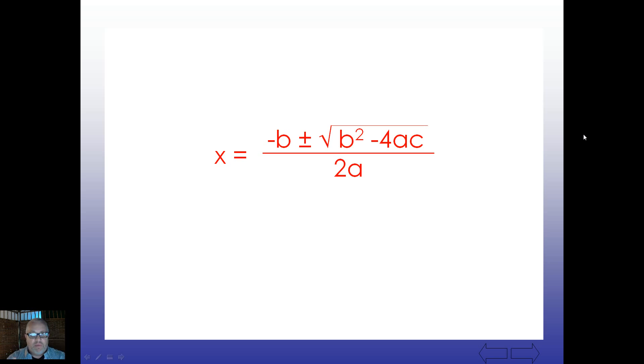x equals, and you have this rational expression here after the x equals, negative b plus or minus the square root of b squared minus 4ac, and all of that's over 2a.